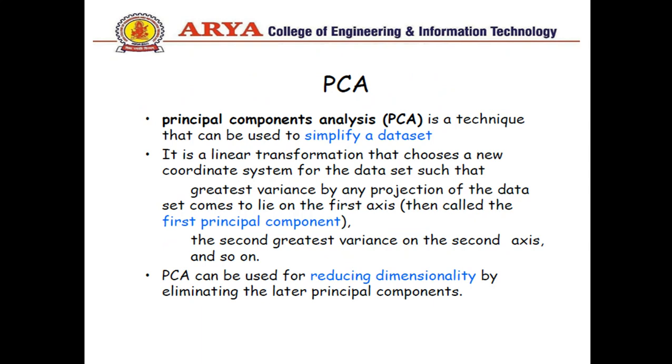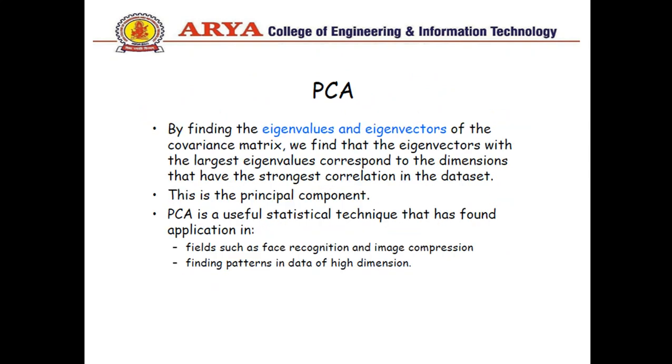When we get principal component analysis we get principal components, they show perpendicular or orthogonal diagrams. By finding the eigenvalues and eigenvectors of the covariance matrix, by solving the covariance matrix we find eigenvalues and eigenvectors. Eigenvalues also depend on the number of dimensions. Suppose we have two dimensional matrix, in that case we will have two eigenvalues and corresponding eigenvectors.